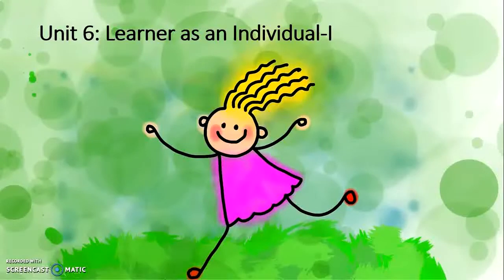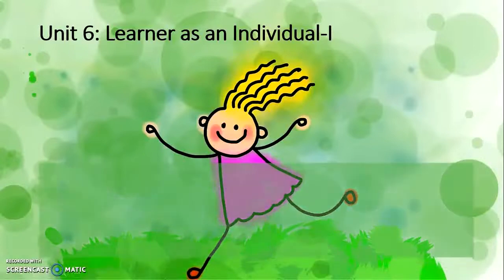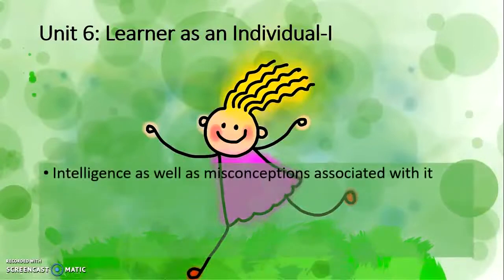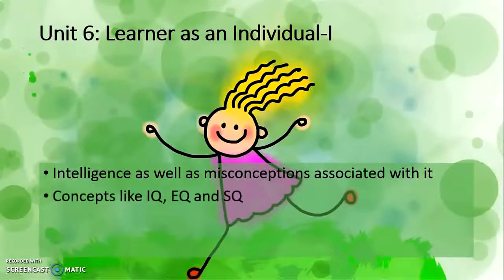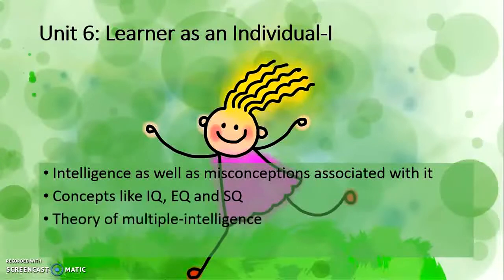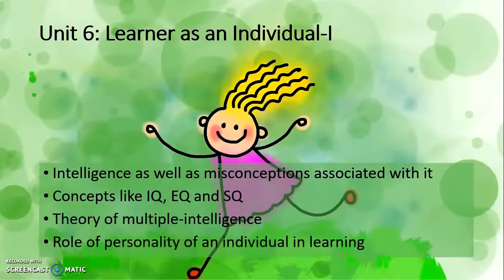Unit Six, Learner as an Individual, discusses intelligence and the misconceptions associated with it, the concepts of IQ, EQ, and SQ, the theory of multiple intelligences, and the role of personality in an individual's learning.